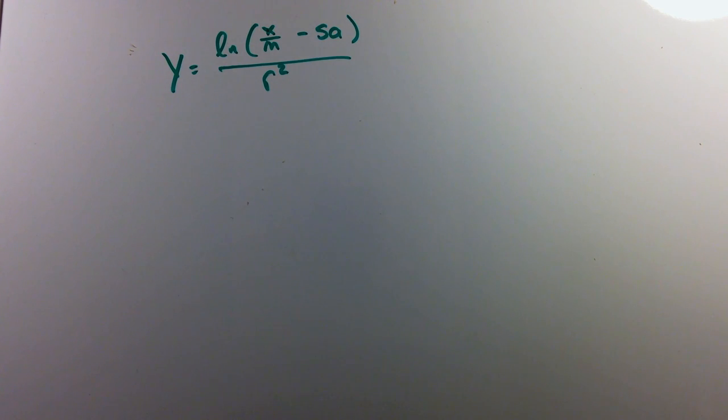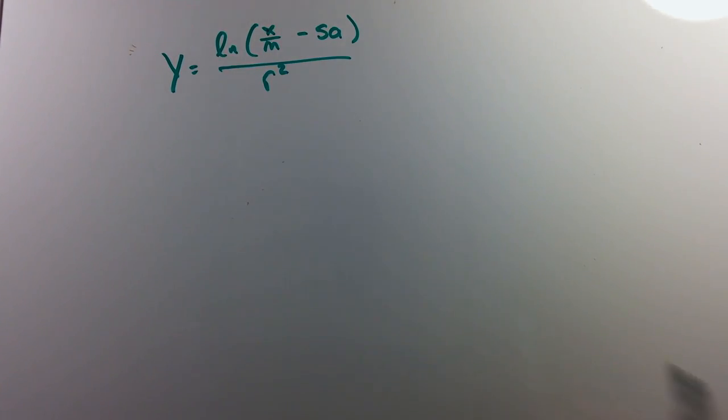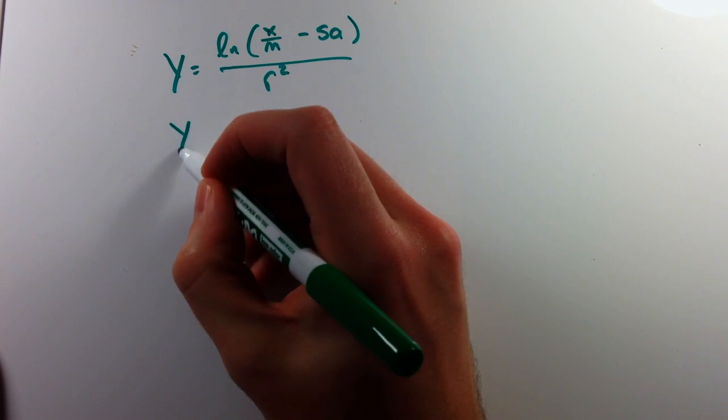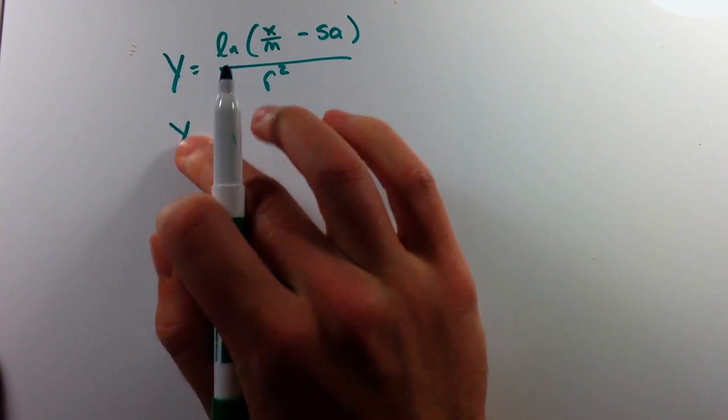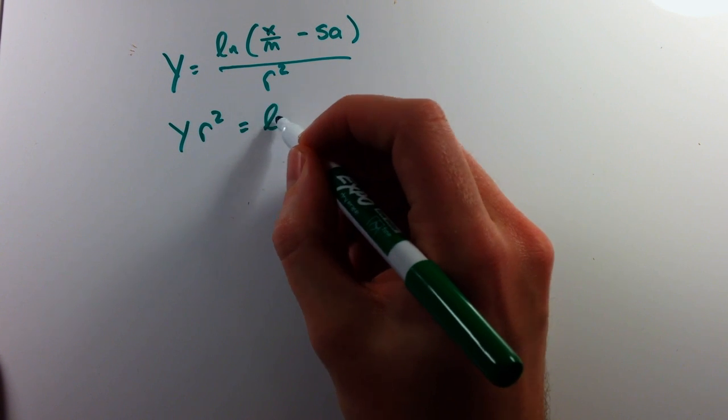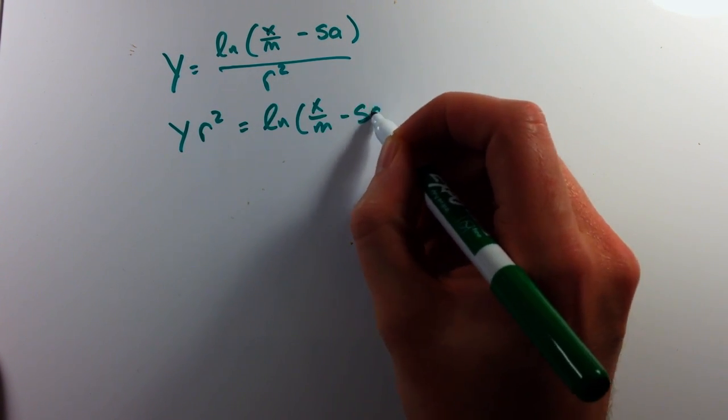We're given this equation: y equals the natural log of x over m minus s times a, all over r squared. To simplify this, I can take the r squared and multiply it to both sides, and I'm left with y r squared equals the natural log of x over m minus s times a.